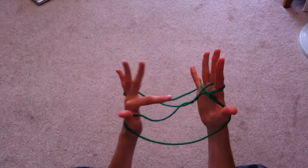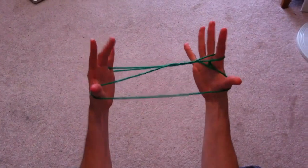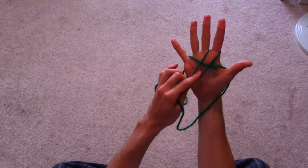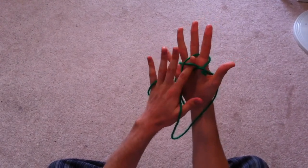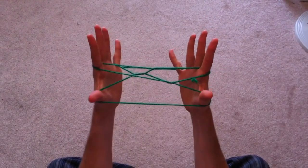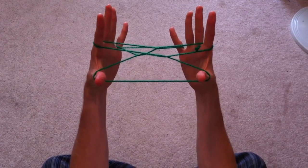So you have two twists in the string. Now with your left pointer, come through this gap and come underneath the right palm of string and open it. You're almost done.